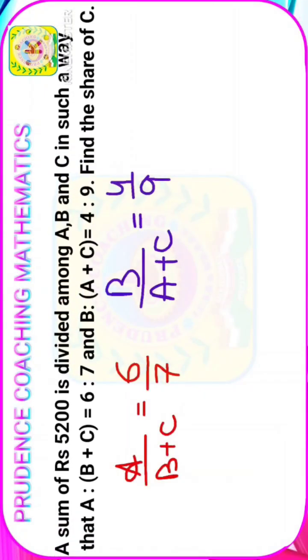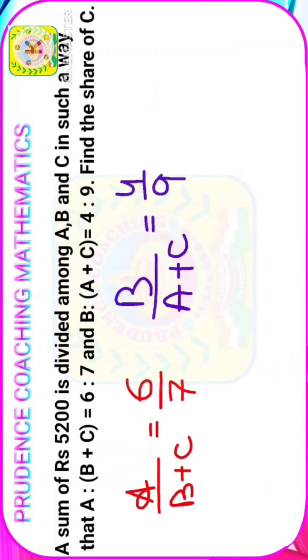A sum of 5200 is divided among A, B, and C in such a way that A is to B plus C equals 6 is to 7, and B is to A plus C is equal to 4 is to 9. Find the share of C.